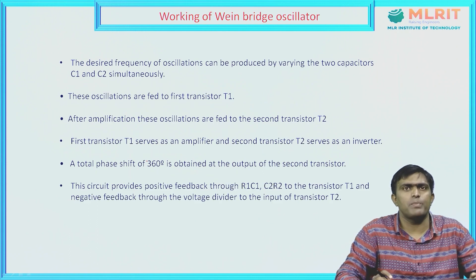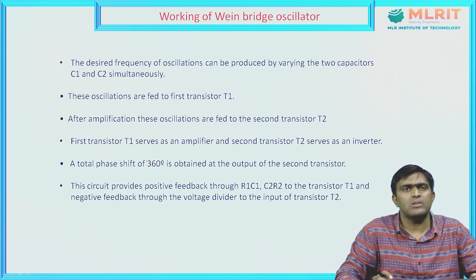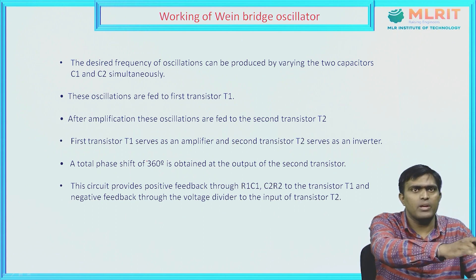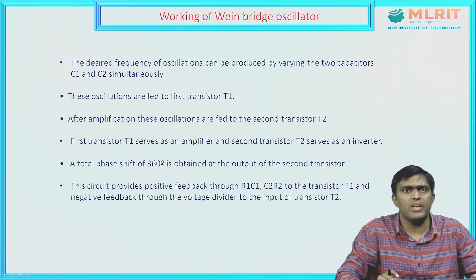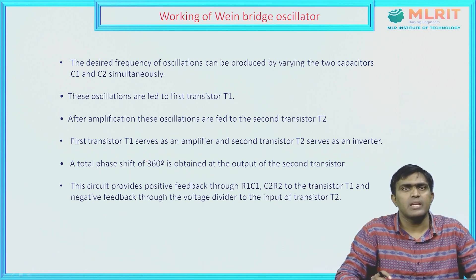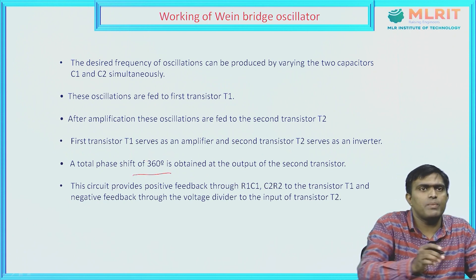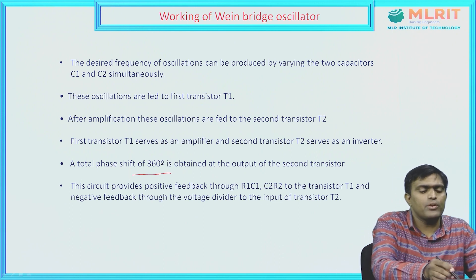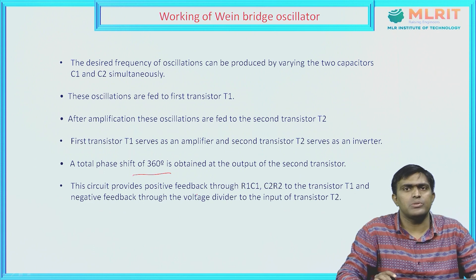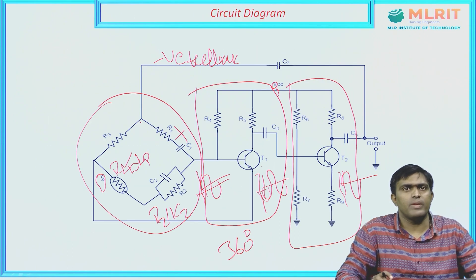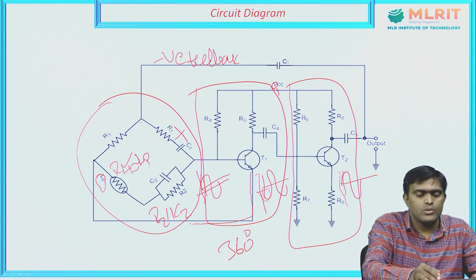The desired frequency of oscillation can be varied by changing the two capacitors C1 and C2 simultaneously. These oscillations are fed to the first transistor T1, and after amplification they are fed to the second transistor T2. T2 acts as an inverter and T1 acts as an amplifier. The circuit provides positive feedback through R1, C1, R2, C2 to transistor T1.